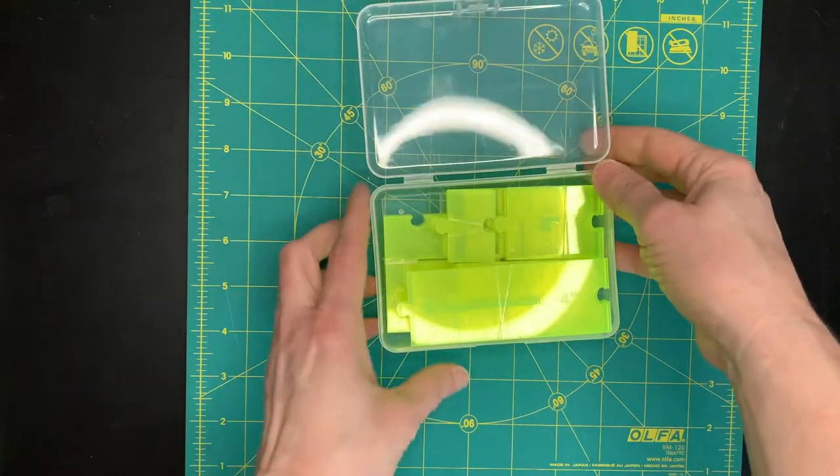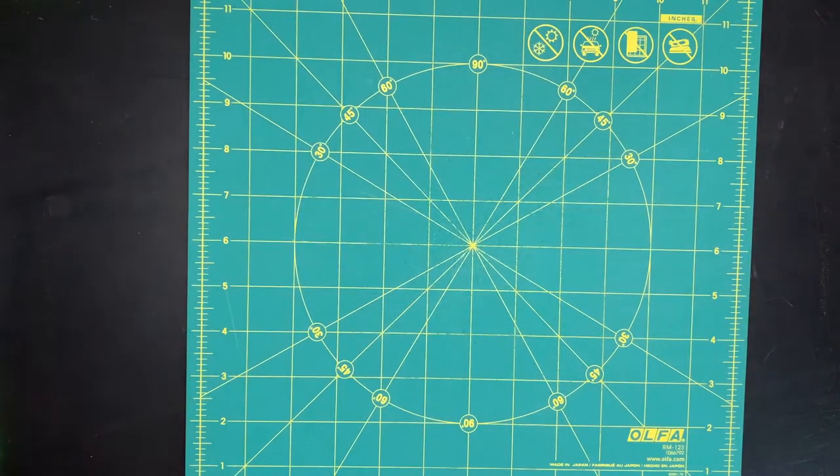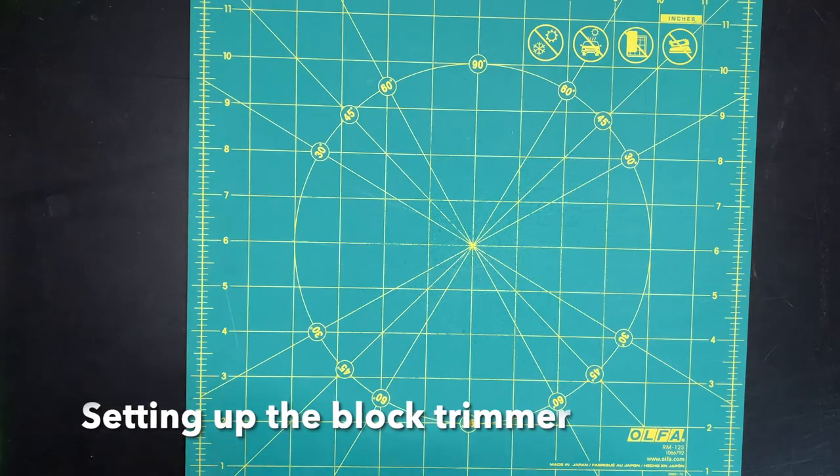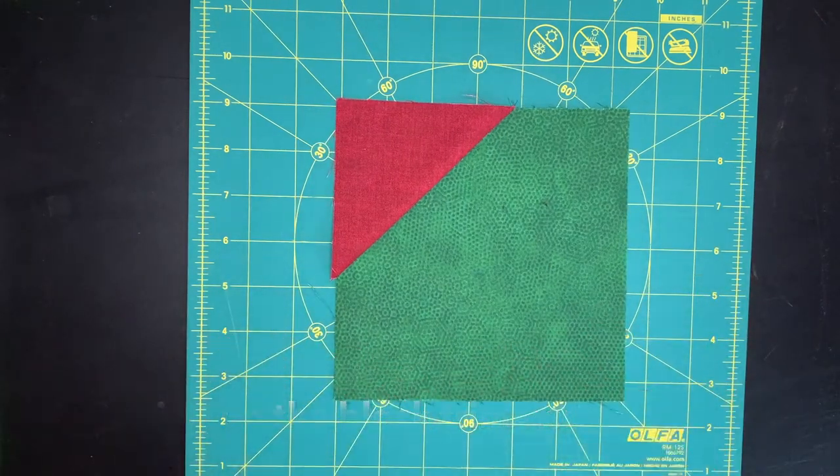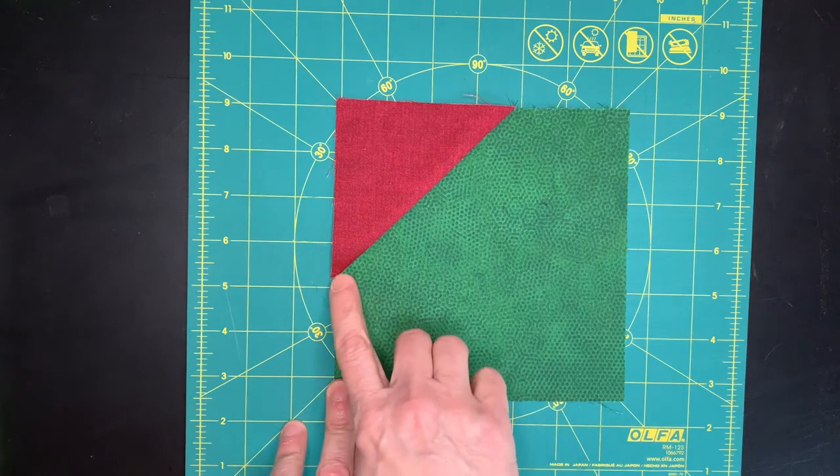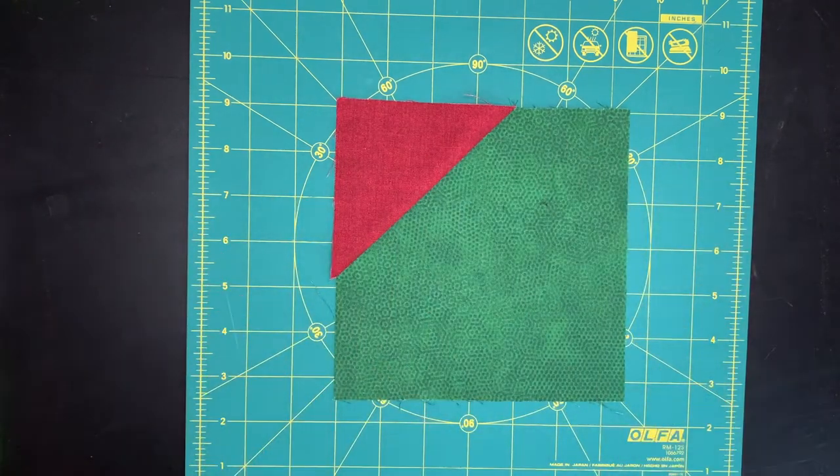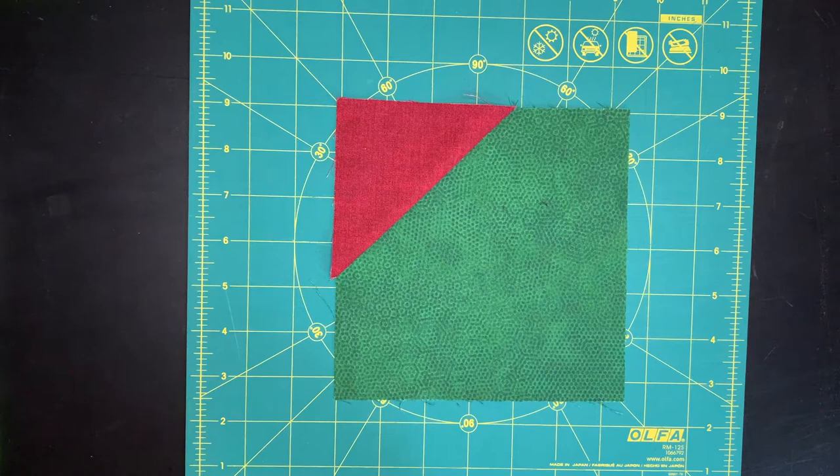Let me show you one of my blocks that is in progress. I have this block that is approximately six and a half inches, but you can see that it isn't perfectly even, and we all know that perfect blocks make much better piecing in the end.